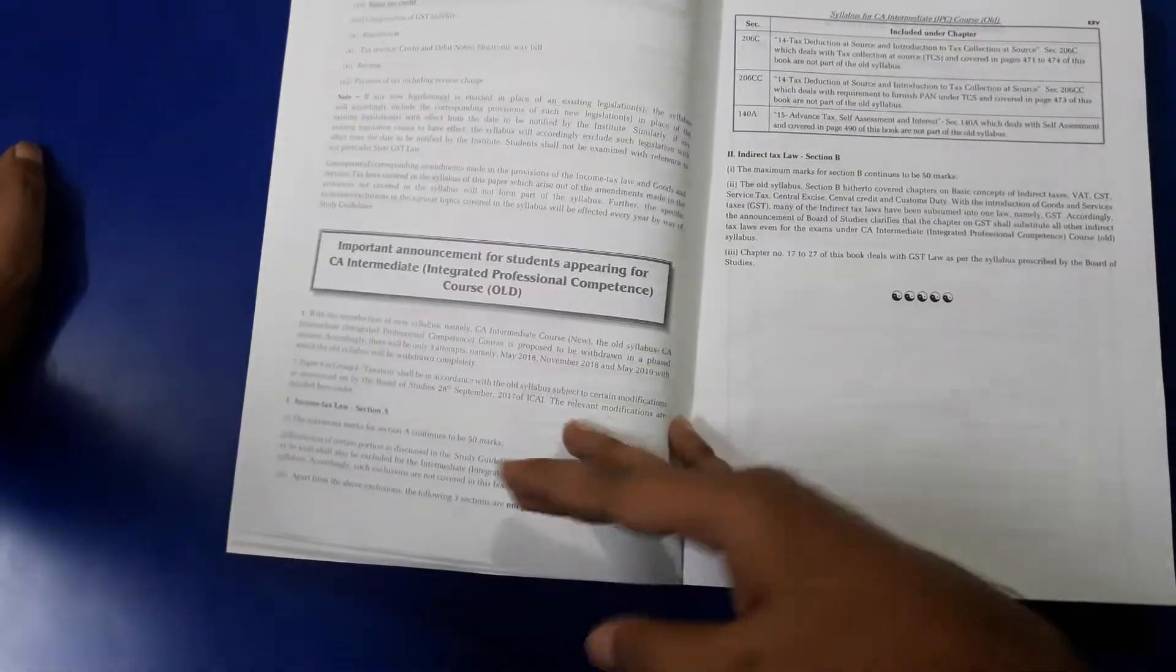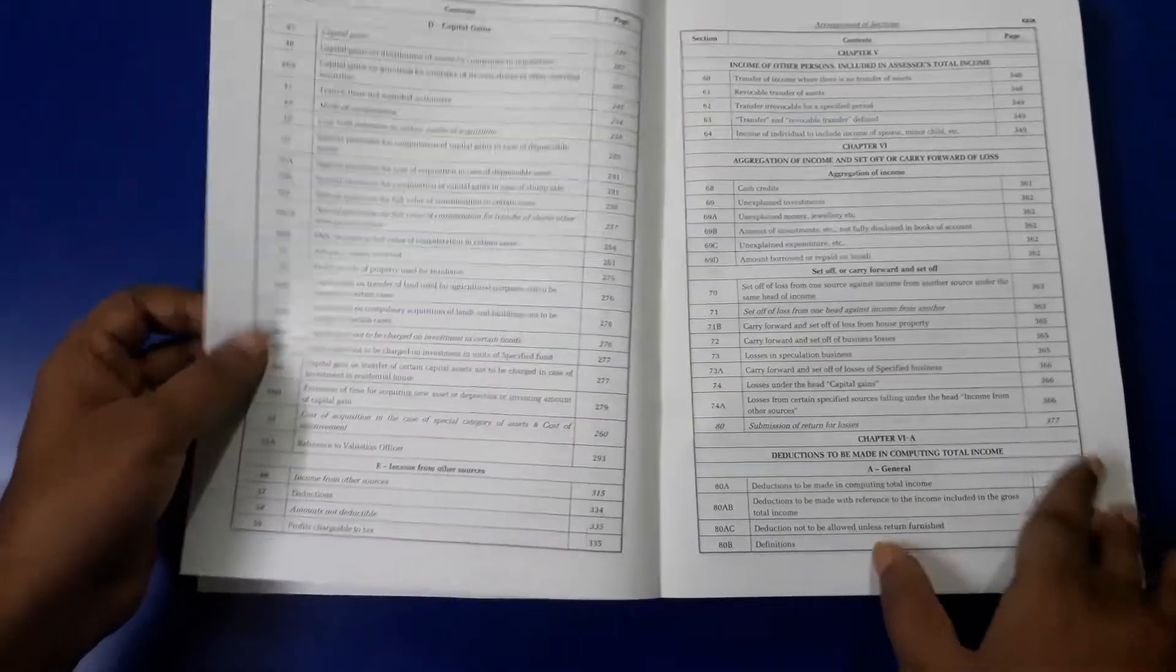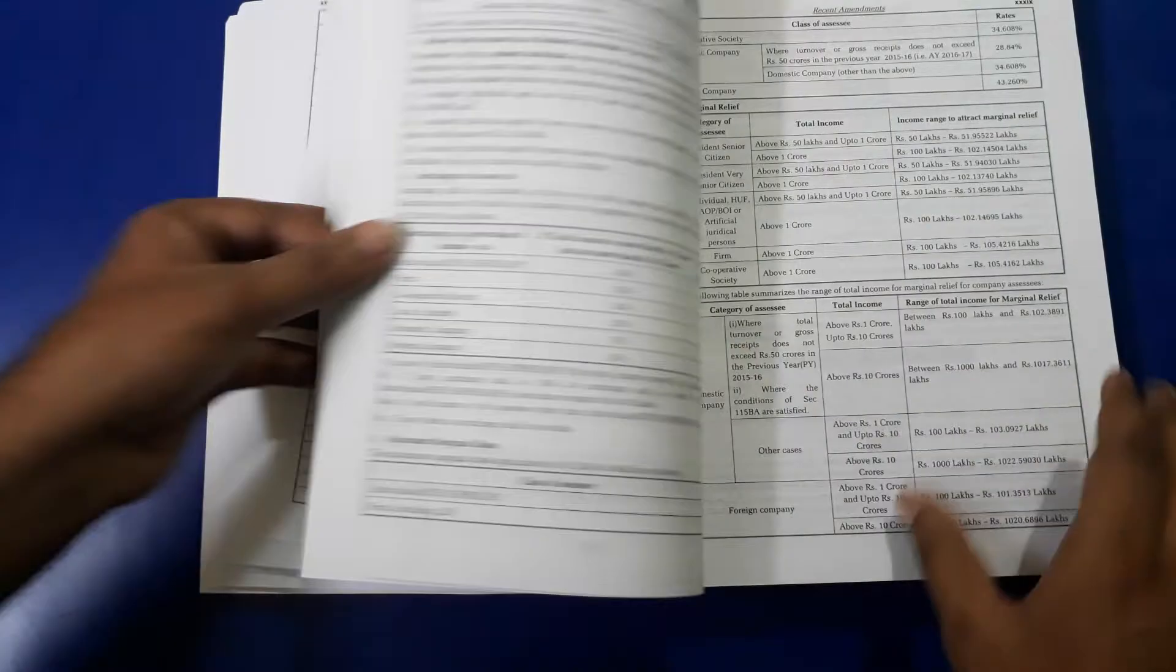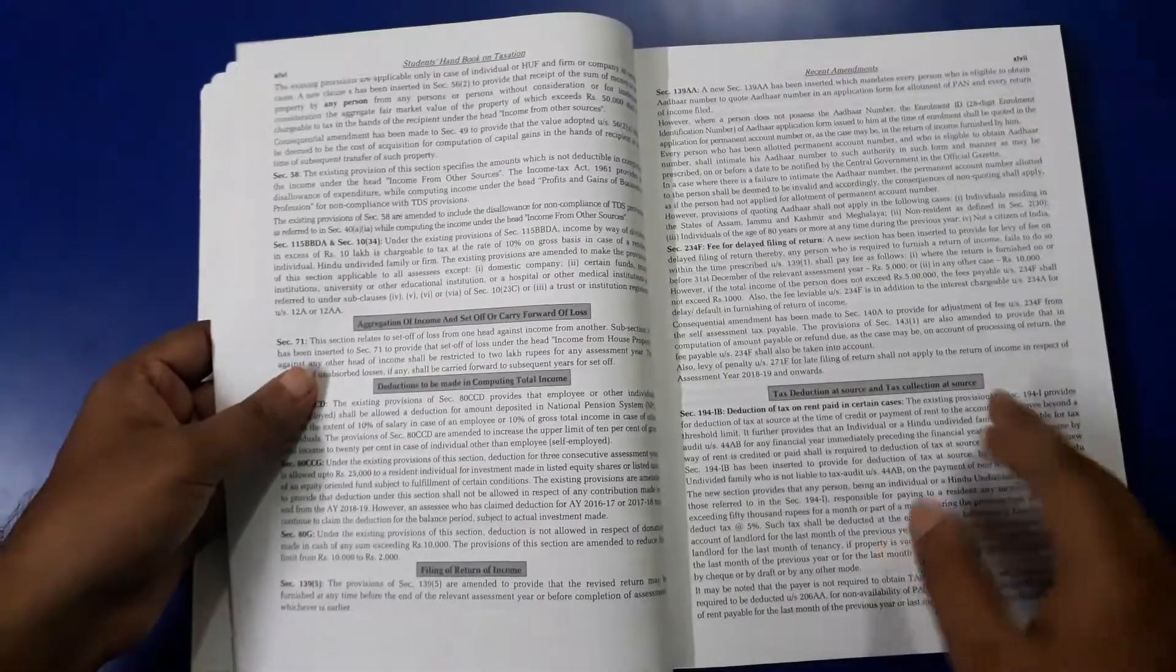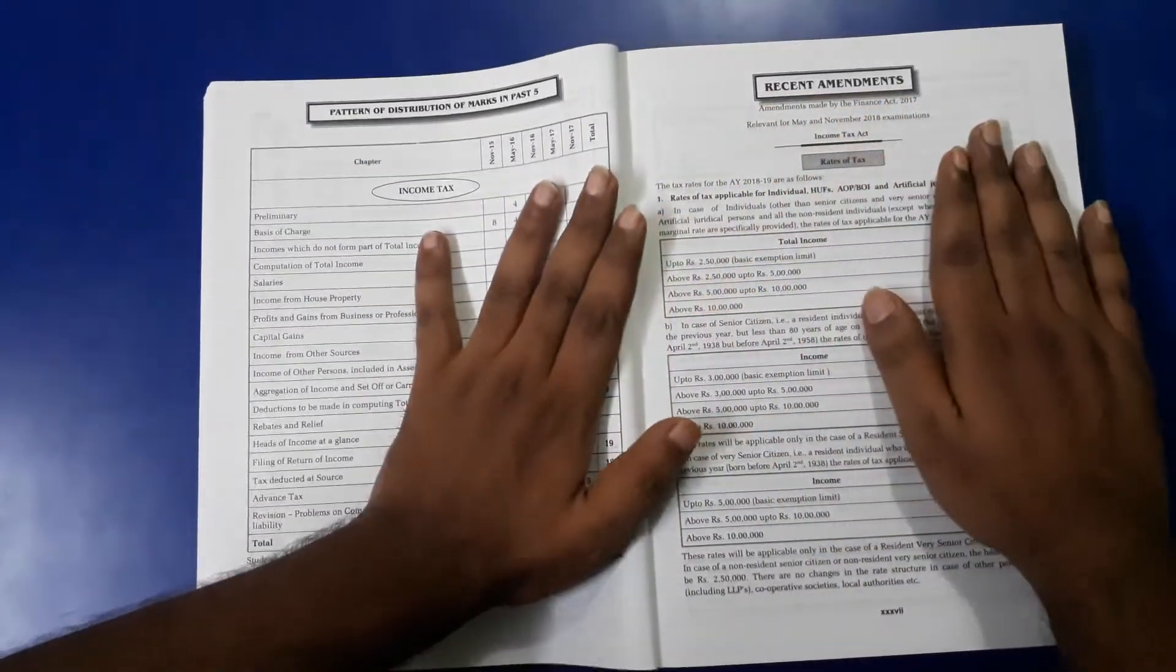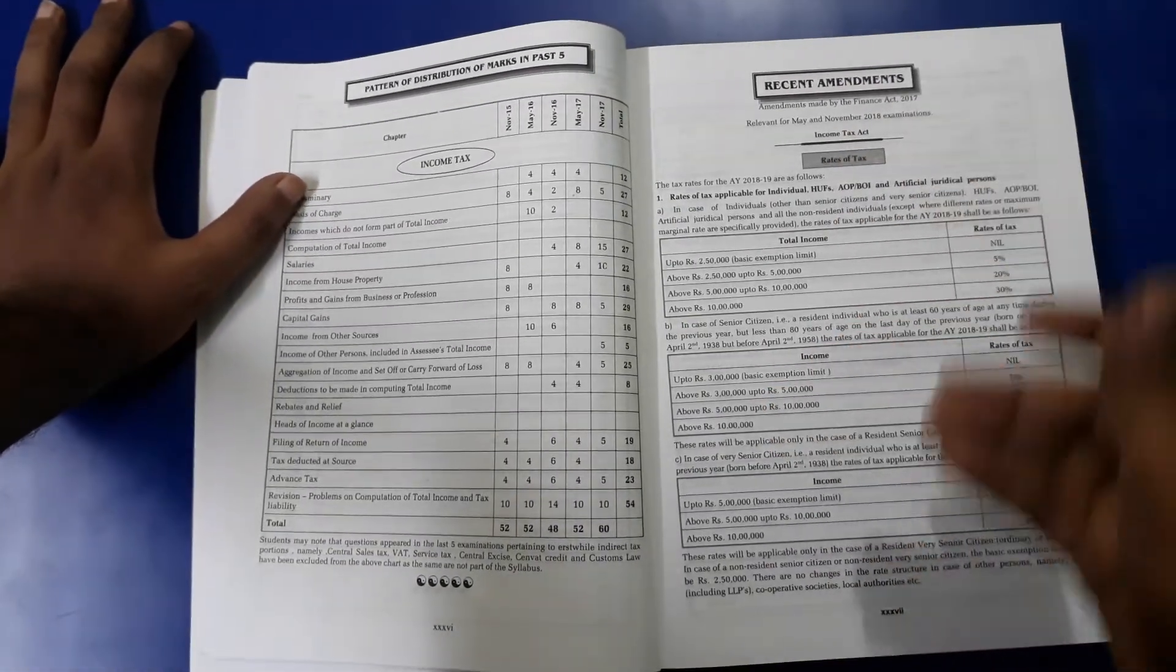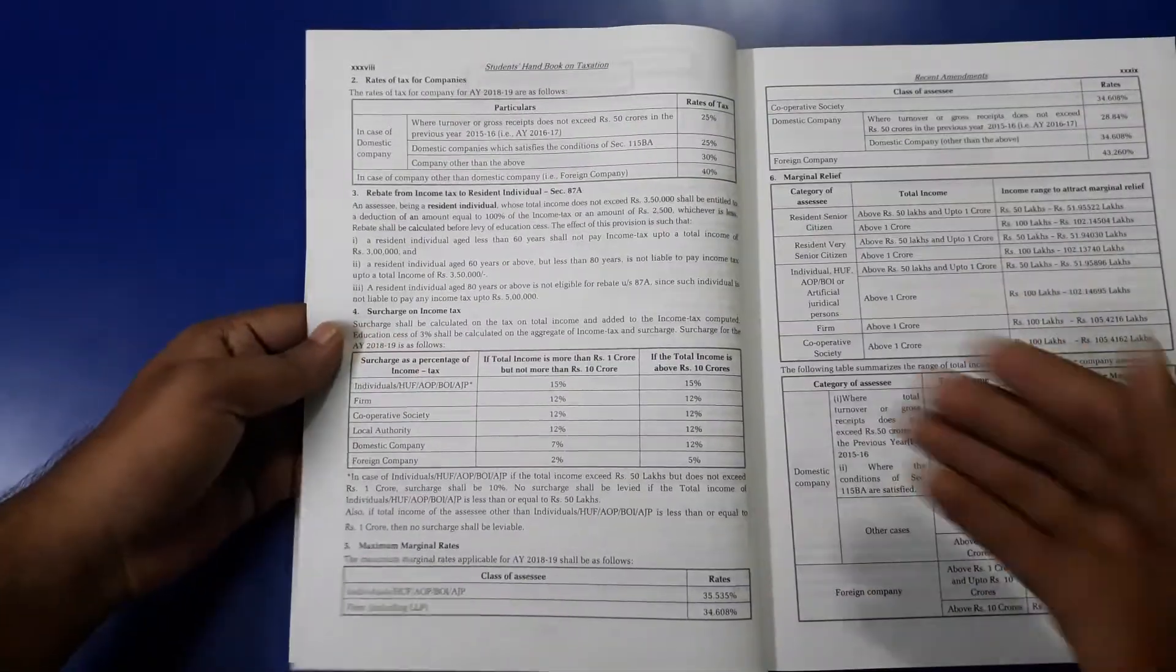Afterwards, the chapters start. First chapter, I am going to show you. In the starting of the book, you will see the recent amendments. So firstly, you will see the recent amendments. Here are the rates which are applicable to individuals as well as companies or other persons.